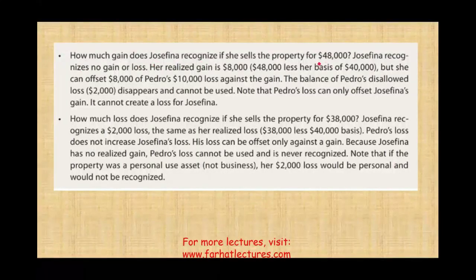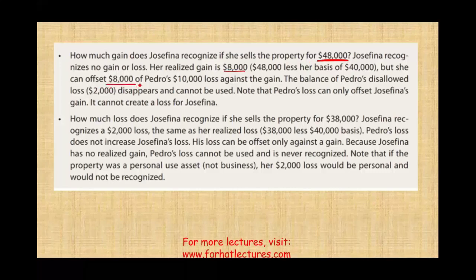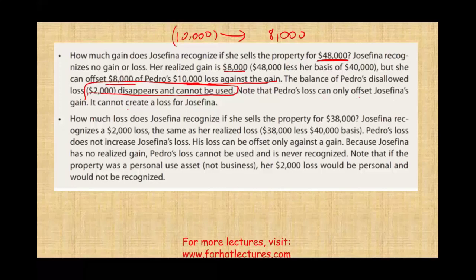How much gain does Josefina recognize if she sells the property for $48,000? Her realized gain is $8,000. She can offset $8,000 of Pedro's unused loss against the gain, bringing it down to zero. The remaining $2,000 of Pedro's unused loss disappears and cannot be used again. Pedro's loss can only offset Josefina's gain — it cannot create a loss for Josefina. That unused loss by the transferor can only bring the gain down to zero.